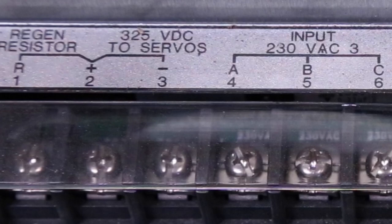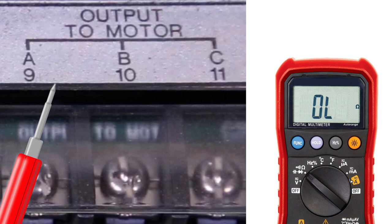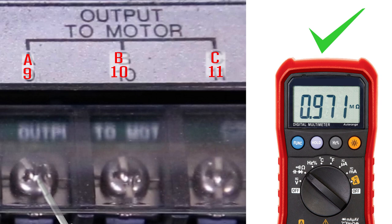First, check the output on the positive side of the DC bus. Set your multimeter to resistance test mode and put the black lead onto terminal 2. It's labeled with a plus sign. Use the red lead to measure the resistance to motor terminals 9, 10, and 11. These are labeled A, B, and C.